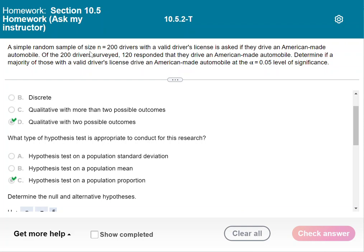It says a simple random sample of size N equals 200 drivers with a valid driver's license is asked if they drive an American-made automobile. Of the 200 drivers surveyed, 120 responded that they drive an American-made automobile. Determine if a majority of those with a valid driver's license drive an American-made automobile at the 0.05 level of significance.